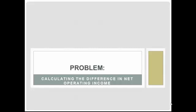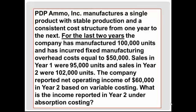Let's look at another problem with variable versus absorption costing. This one we're going to calculate the difference in net operating income between the two methods, and we'll have to use some problem-solving skills. PDP Ammo, Inc. manufactures a single product with stable production and a consistent cost structure. For the last two years, the company has manufactured 100,000 units and incurred fixed manufacturing overhead costs equal to $50,000. Sales in year one were 95,000 units and sales in year two were 102,000 units.